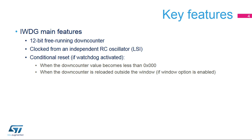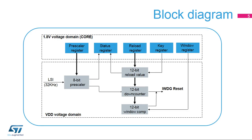The IWDG registers are located in the core voltage domain, while its functions are in the VDD voltage domain. This architecture makes it possible for the IWDG to continue operating in stop and standby modes. The 8-bit pre-scaler is used to divide the LSI oscillator frequency.